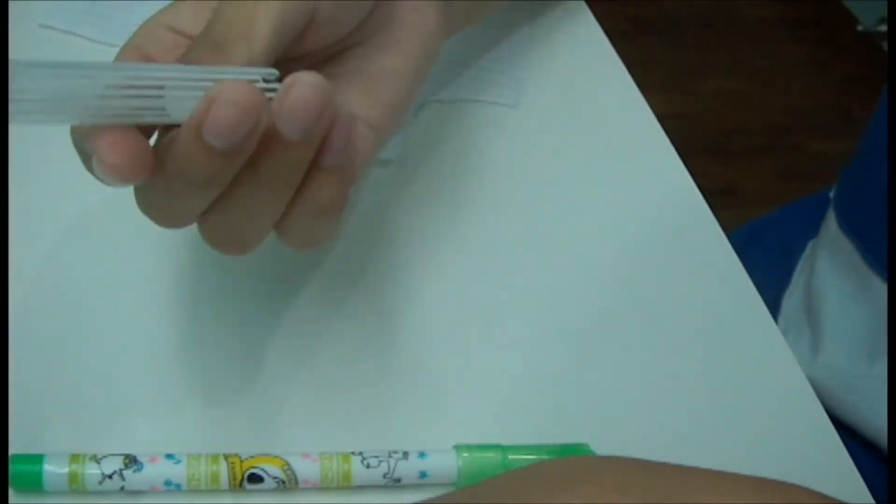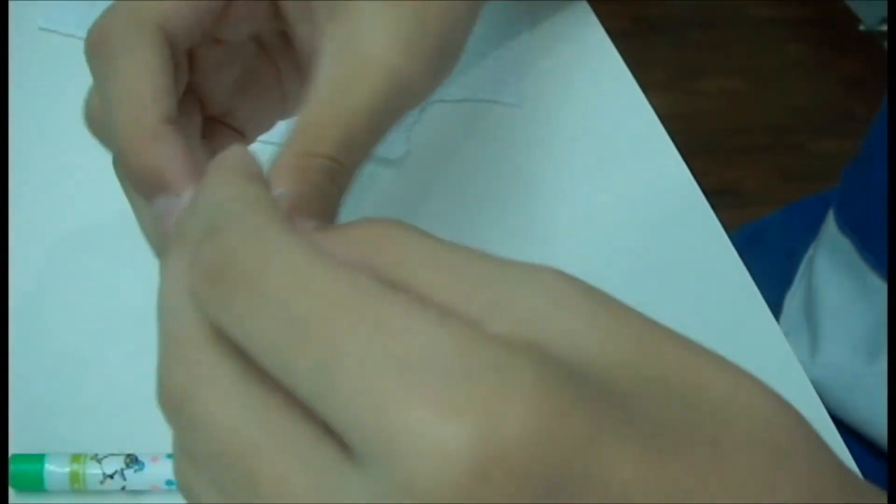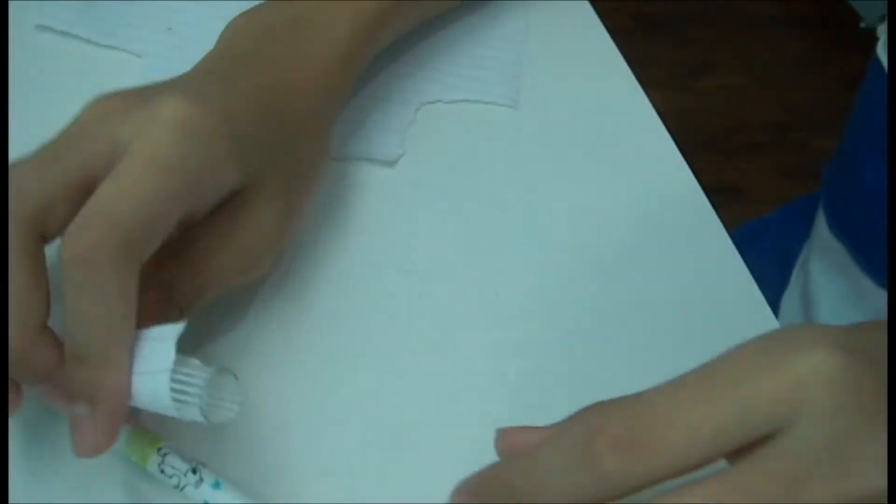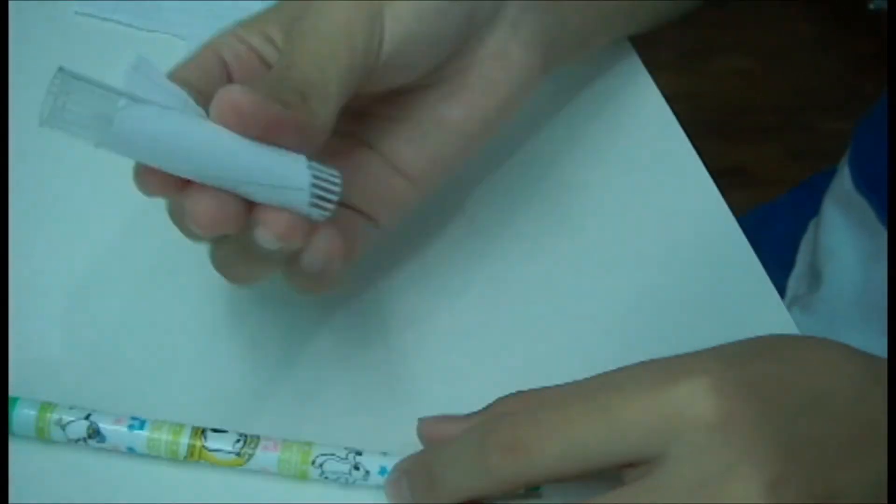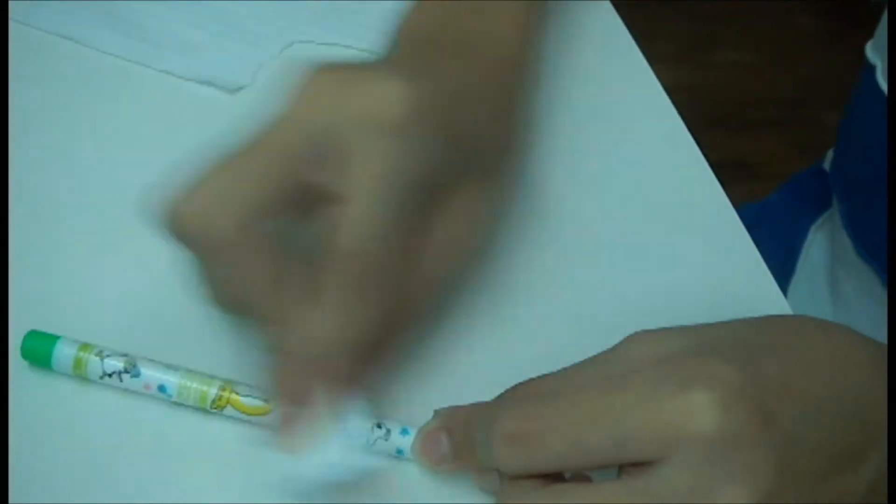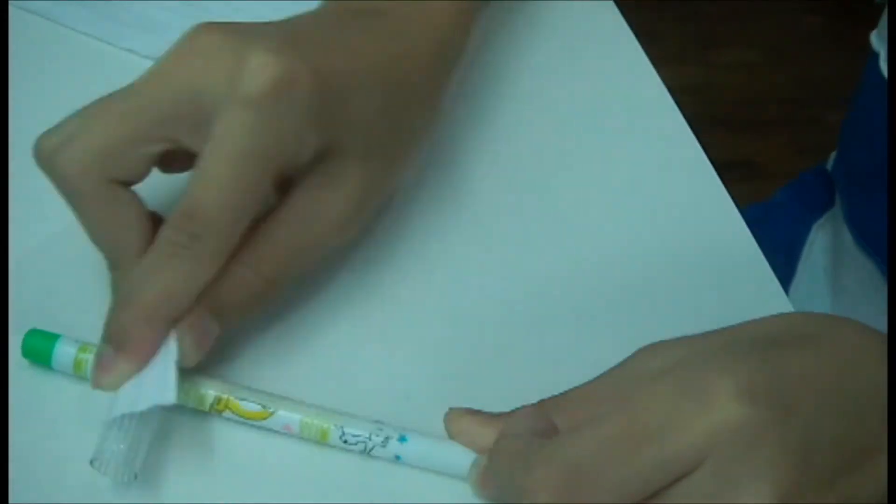Next, what you're gonna do is wrap the paper around the barrel like that, and then you rub vigorously. You should see that some of the color is coming off.